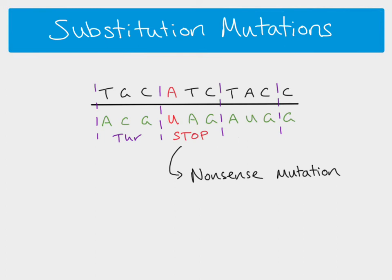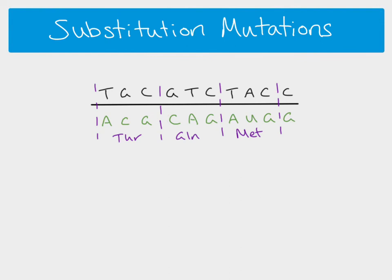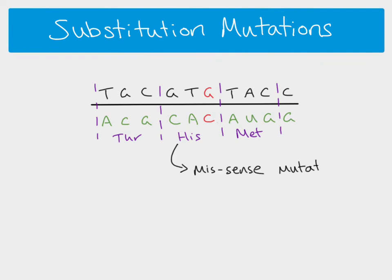A nonsense mutation will have a big impact on protein function and will probably result in a completely non-functioning protein. Another type of substitution mutation is a missense mutation: in this case a C is substituted for a G, giving a change in the RNA codon and a different amino acid. This is called a missense mutation — a substitution that causes a change in a single amino acid. It will probably cause a change to the protein's primary and therefore tertiary structure, but it won't have as much impact as a frame shift or a nonsense mutation.